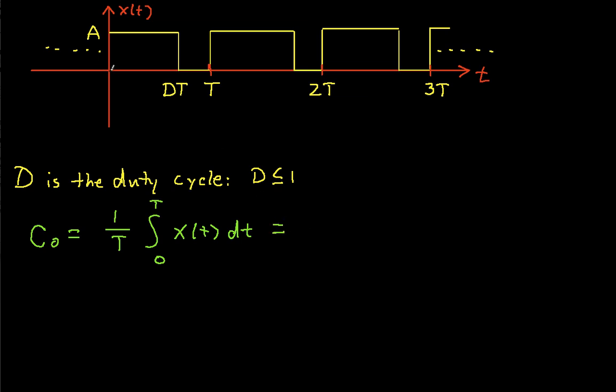between 0 and T, our signal X(T) is equal to A. So we'll have A dT, and it's equal to A when T is between 0 and D times T. And so if I work this out, I get A times D.